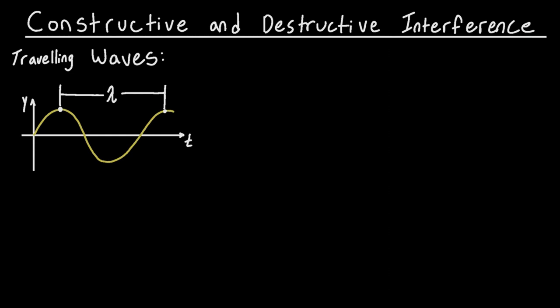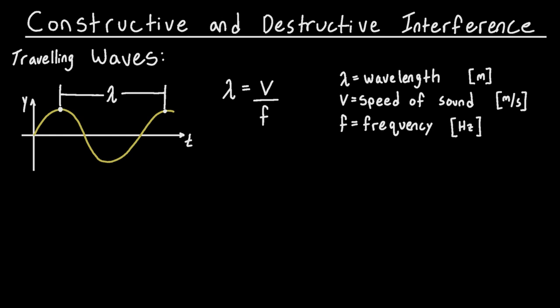Let's take a look at a traveling wave. We know that the wavelength is going to be related to the speed of the wave and the frequency with this equation. We have lambda as the wavelength in meters, v as the speed of sound in meters per second — so in this one we're going to be talking about sound waves — and f is going to be the frequency in hertz.